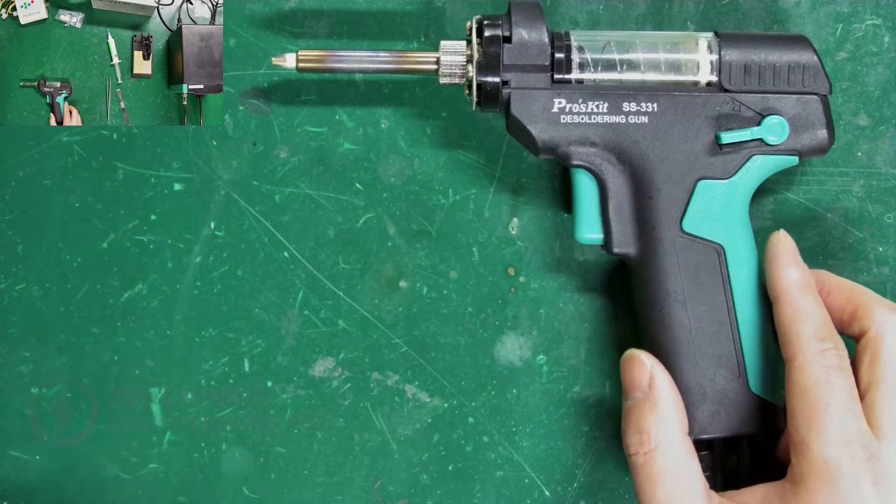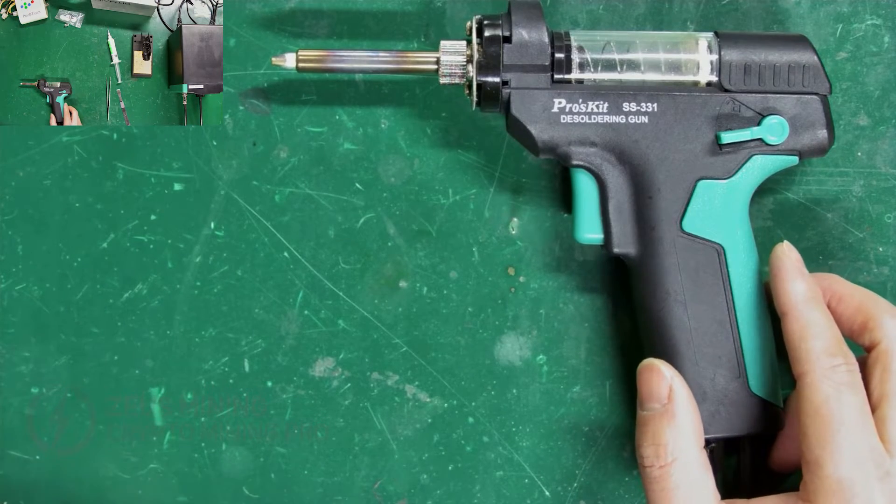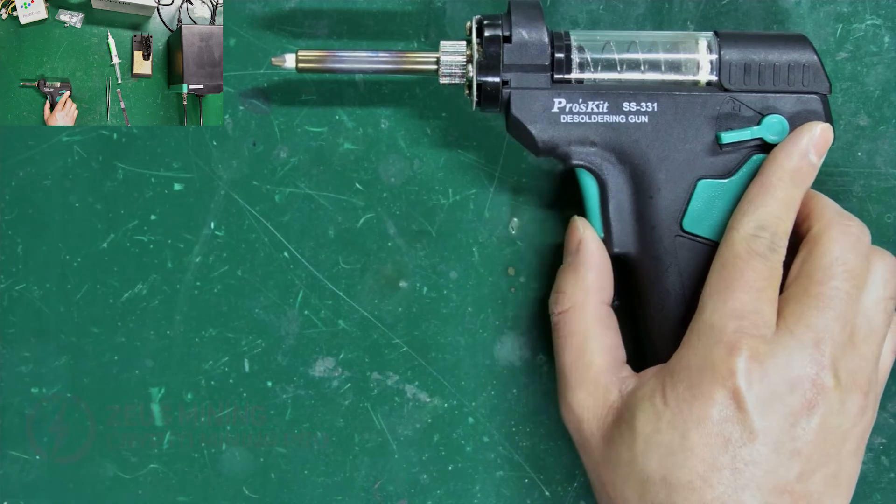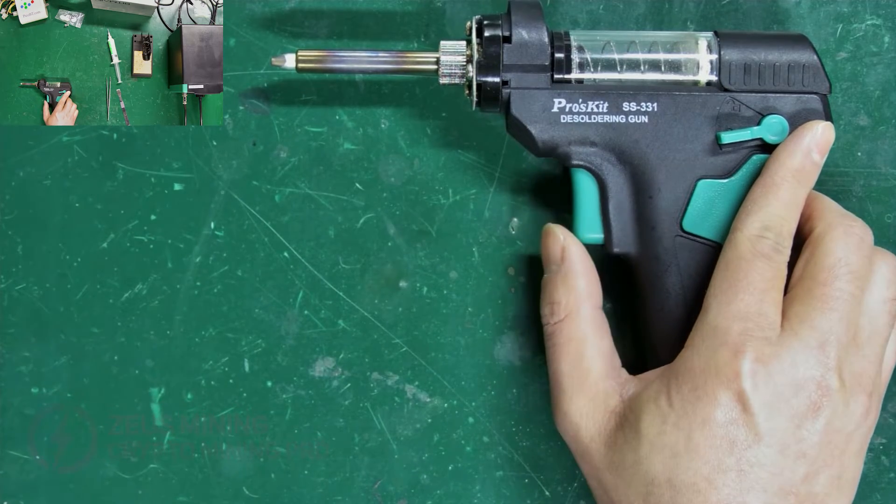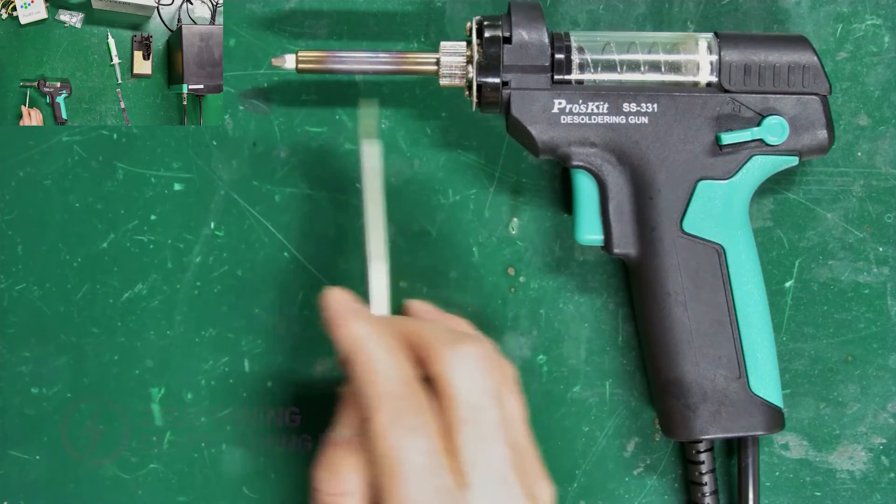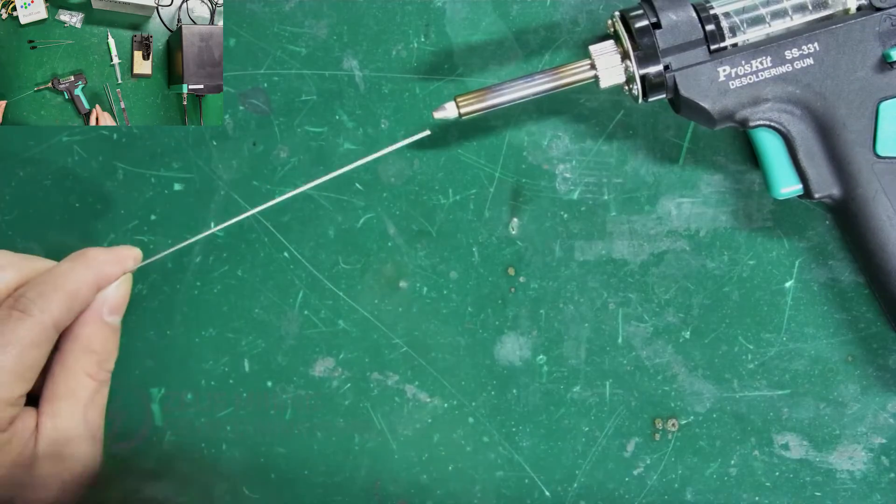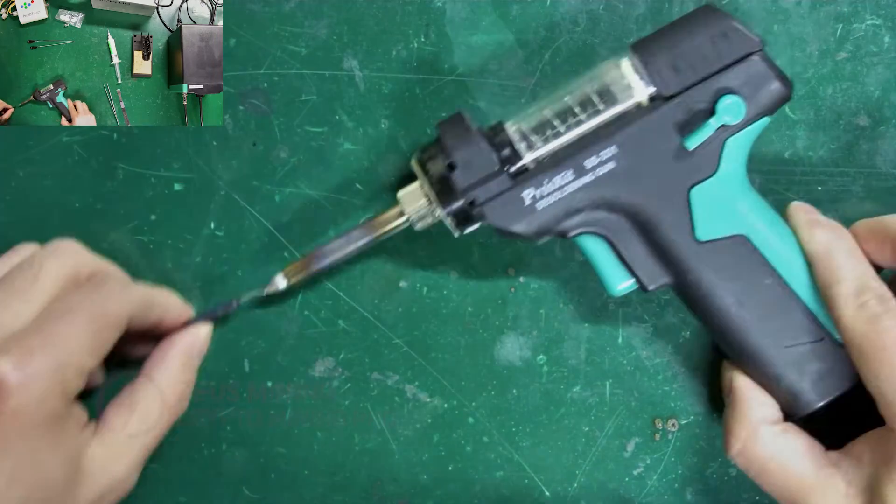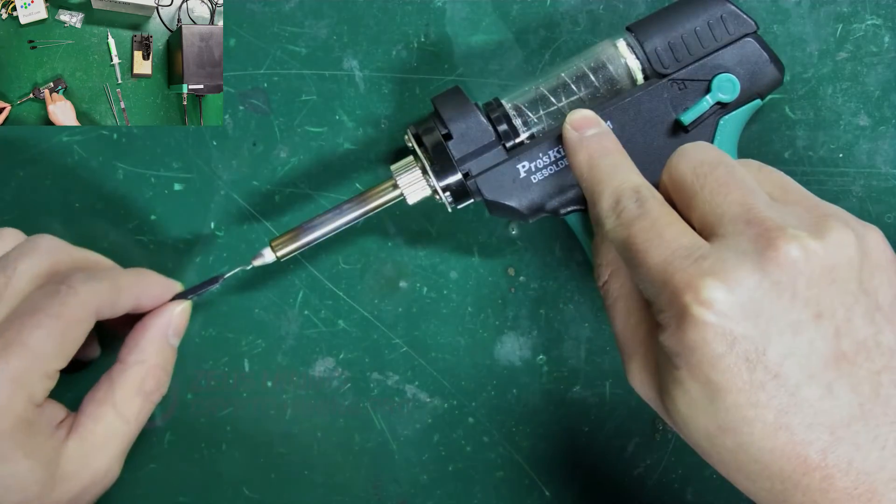Finally, let's understand the maintenance of this tool. After each use, it's recommended to empty suck 3 to 5 times to clear the remaining solder in the tube. If the suction power decreases, use a cleaning needle to clear the steel tube.